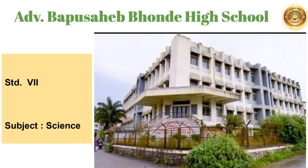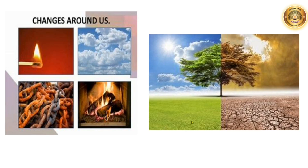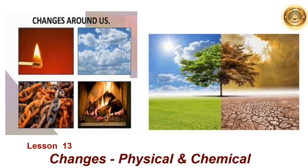Hello children, welcome to your 7th standard science class. When you look around, we see many changes. Things are changing all around you. What are the causes of these changes? The materials around you are changing in shape, structure, releasing or absorbing energy and creating a new substance at certain times. Let us learn about these changes and how they can be classified according to their occurrences. We are going to study these changes in our lesson 13, Changes Physical and Chemical.